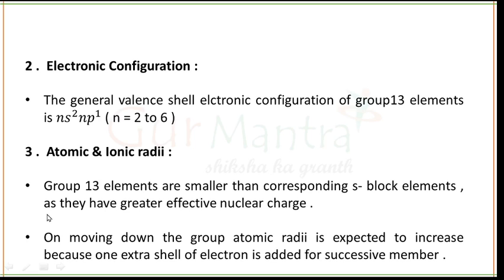Next is the electronic configuration. The general valence shell electronic configuration of group 13 elements is ns²np¹, where n represents the principal quantum number and the value of n varies from 2 to 6. For example, in the case of boron, the electronic configuration is [He] 2s² 2p¹.